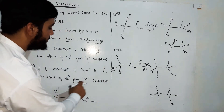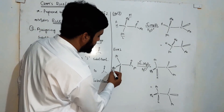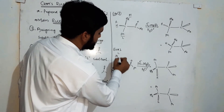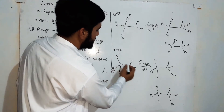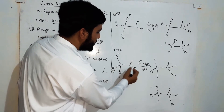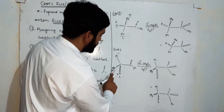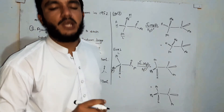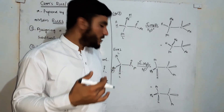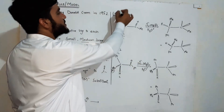Rule number three: if the larger substituent is syn to the carbonyl group, then the attack of the nucleophile will be according to the medium substituent. In this case, with phenyl as large, if the large substituent is syn — in the same plane as the carbonyl group — phenyl (the nucleophile) is added according to the medium-sized substituent. If medium is above the plane, addition is above; if below, addition is below.